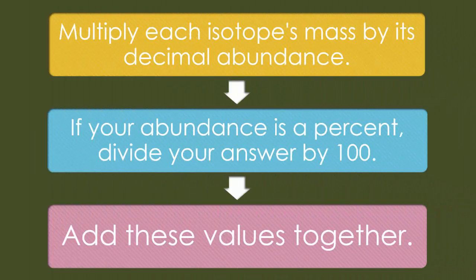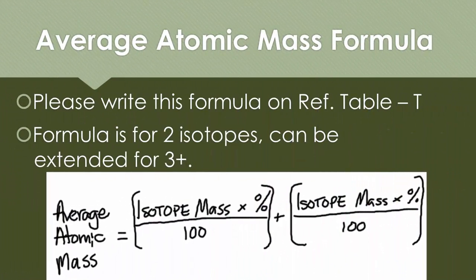We're going to multiply each isotope's mass by its decimal abundance — so if your abundance is a percent, divide by 100 first — and then we add all these values together. Looking at reference table T where all your formulas are, write down this formula: AAM (average atomic mass) equals [isotope mass × percent ÷ 100] + [isotope mass × percent ÷ 100]. This is for two isotopes. If you have three isotopes, you extend it with another bracket of isotopic mass times percent over 100, and so on for four or five isotopes.